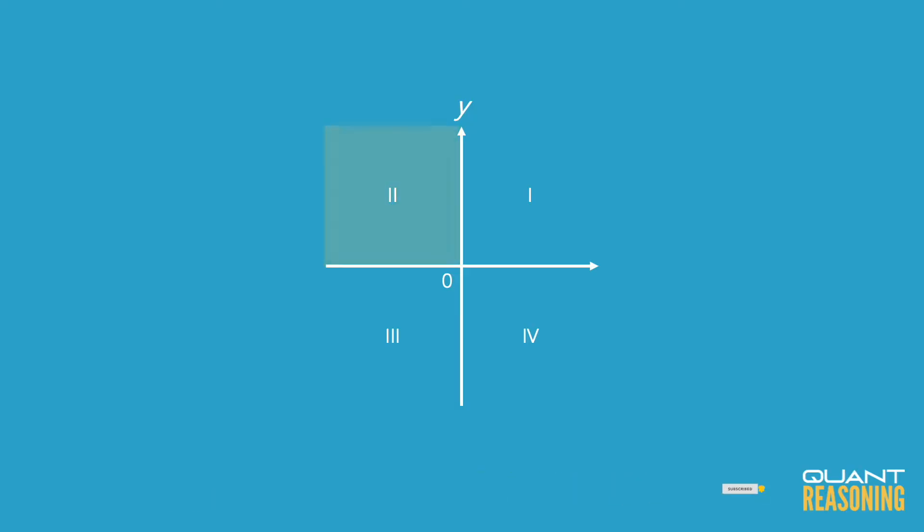So it turns out that quadrants 2 and 4 are both good. The correct answer is answer choice D.